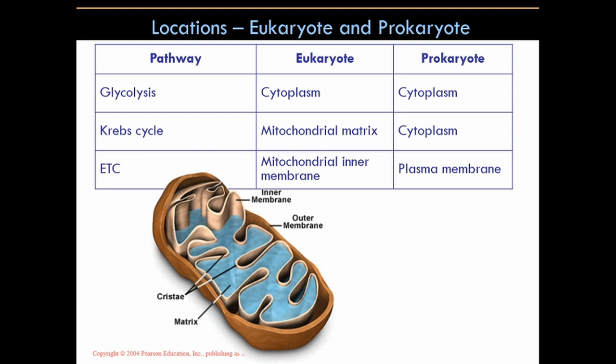Looking at the three processes we just discussed — glycolysis, Krebs cycle, and the ETC or electron transport chain — I want to give you an idea of where those processes take place within eukaryotic and prokaryotic cells. Glycolysis, in both eukaryotes and prokaryotes, occurs in the cytoplasm. The Krebs cycle in eukaryotes takes place in the matrix of the mitochondrion.